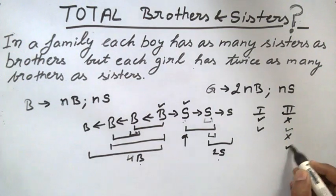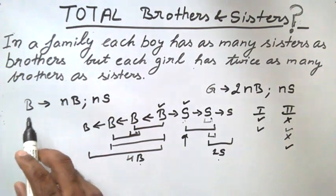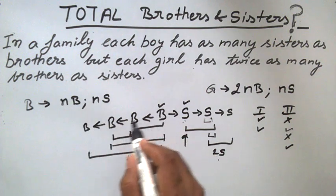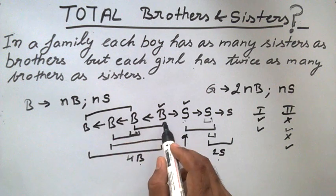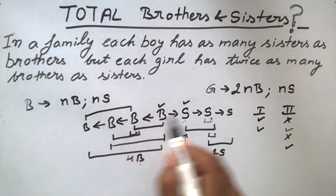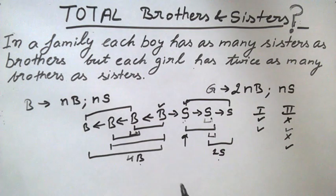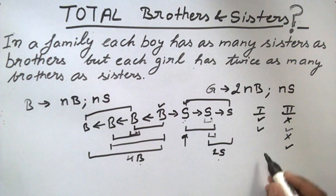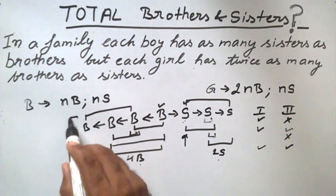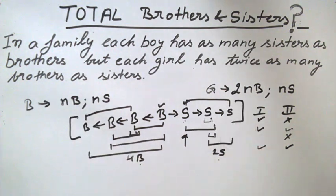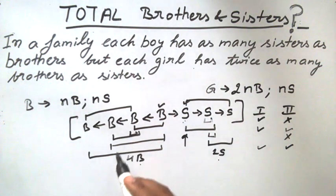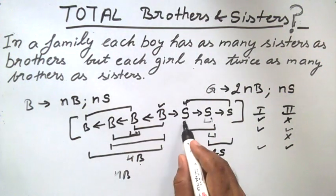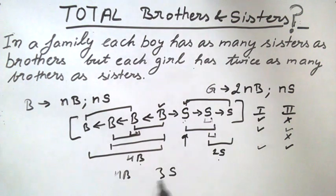The number of brothers is twice the sisters, which satisfies the second condition. And checking the first condition: for any boy, there are three brothers and three sisters — equal numbers of brothers and sisters. So this also satisfies the first condition. This is the desired pattern of the given puzzle: four brothers and three sisters in total.